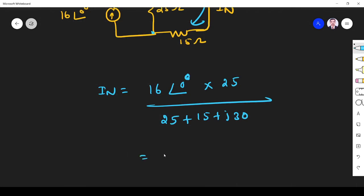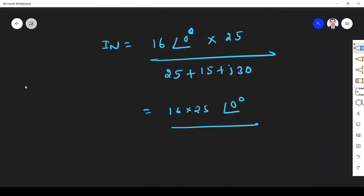So it will be 16 into 25∠0°. This is 40 plus j30.